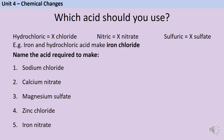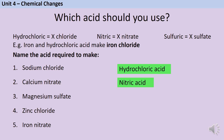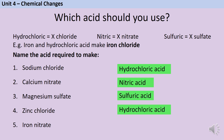To make sodium chloride, we look at the second part of the name — chloride — and that tells us we need hydrochloric acid. Calcium nitrate is made using nitric acid. Magnesium sulfate is made using sulfuric acid. For zinc chloride, we need hydrochloric acid. And for iron nitrate, we need nitric acid.